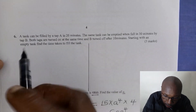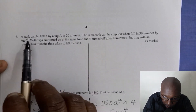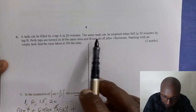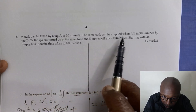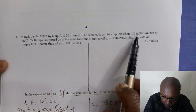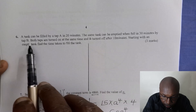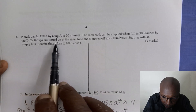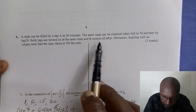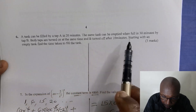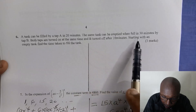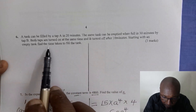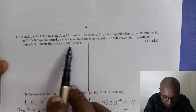Rates of work. A tank can be filled by tap A in 20 minutes. The same tank can be emptied when full in 30 minutes by tap B. Both taps are turned on at the same time and B is turned off after 10 minutes. Starting with an empty tank, find the time taken to fill the tank.